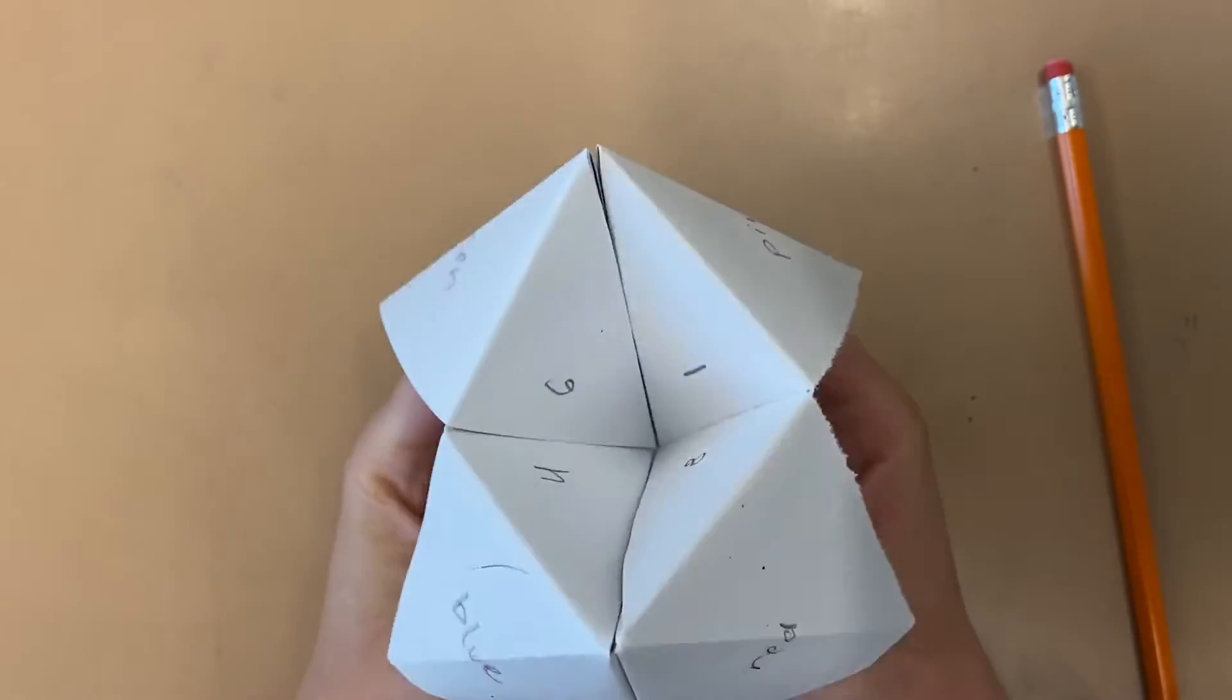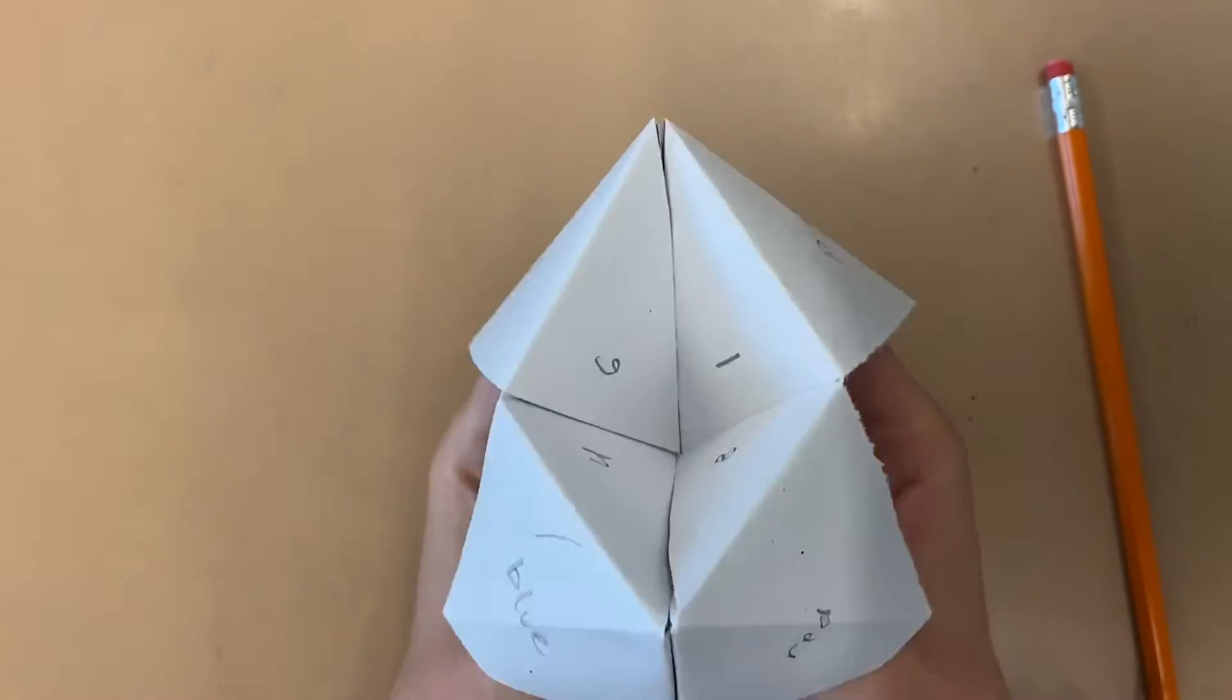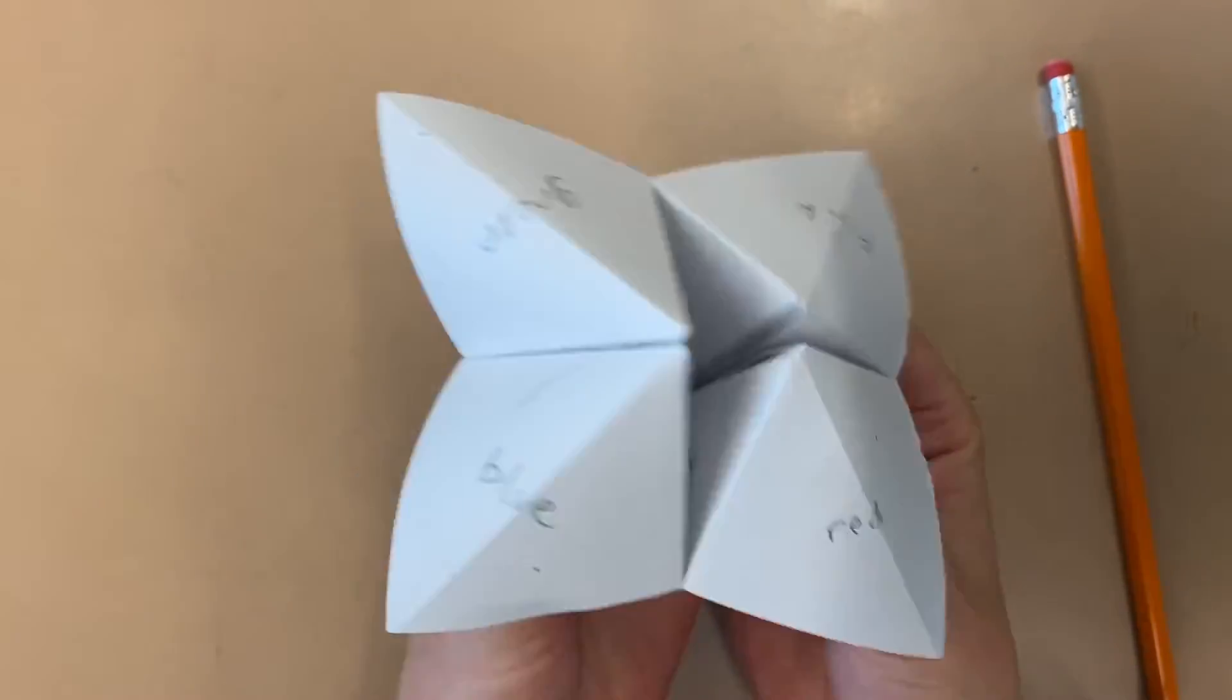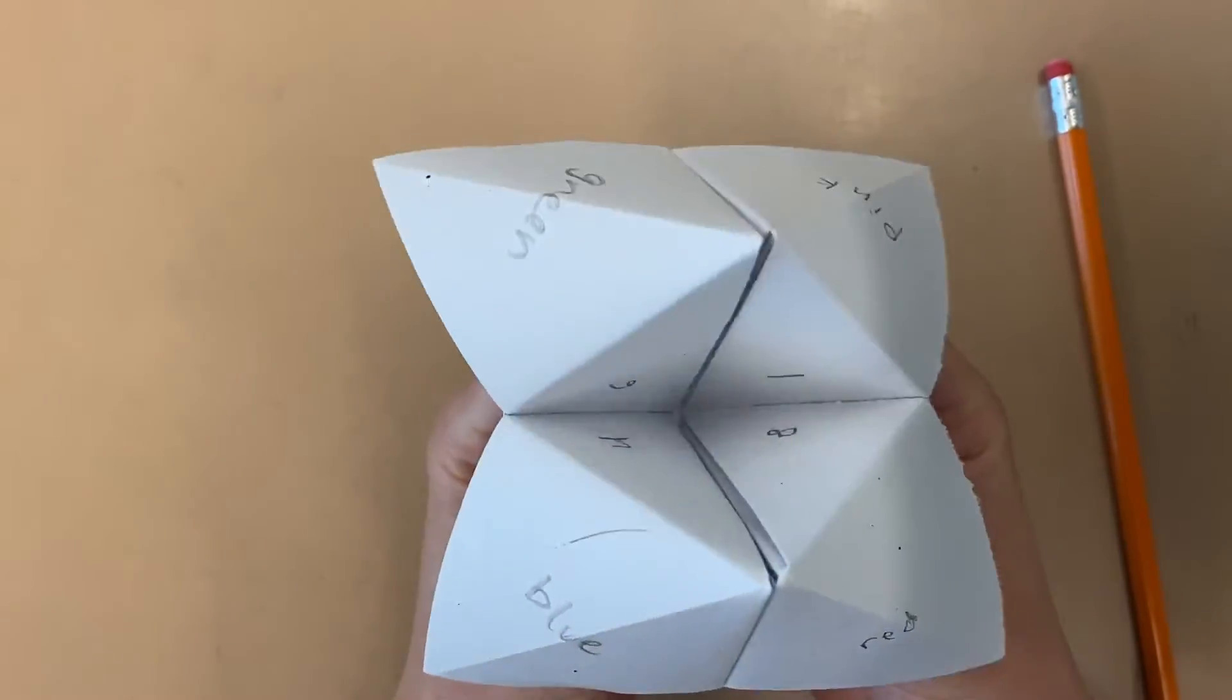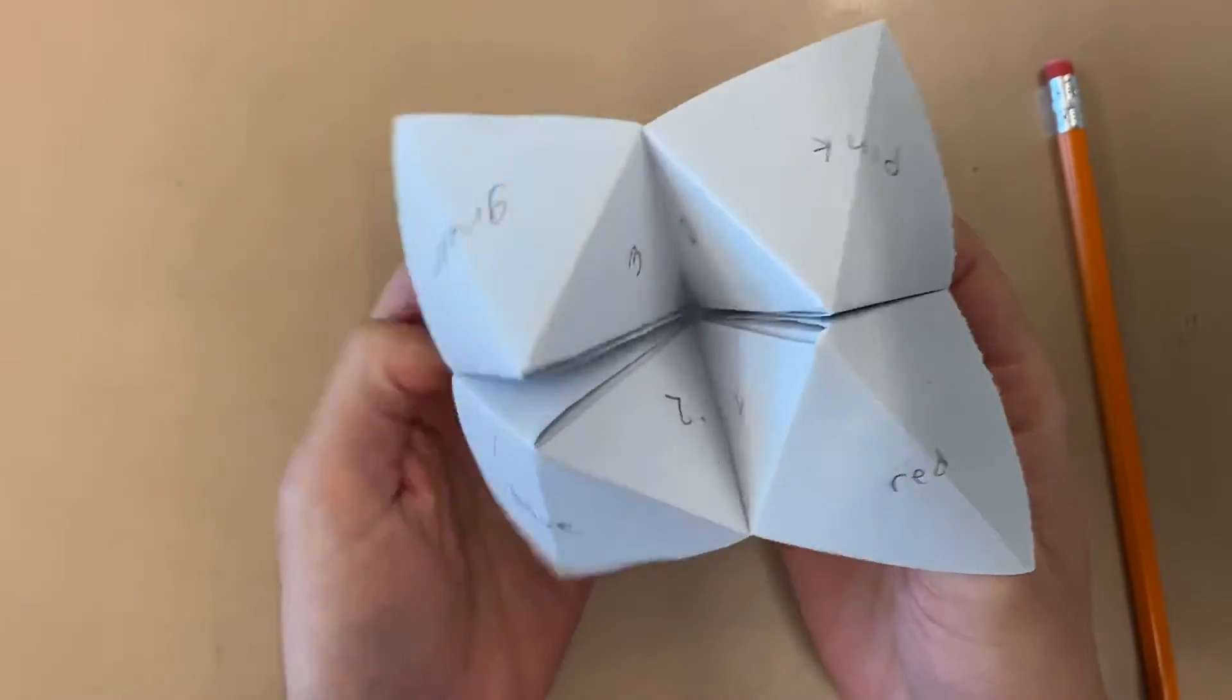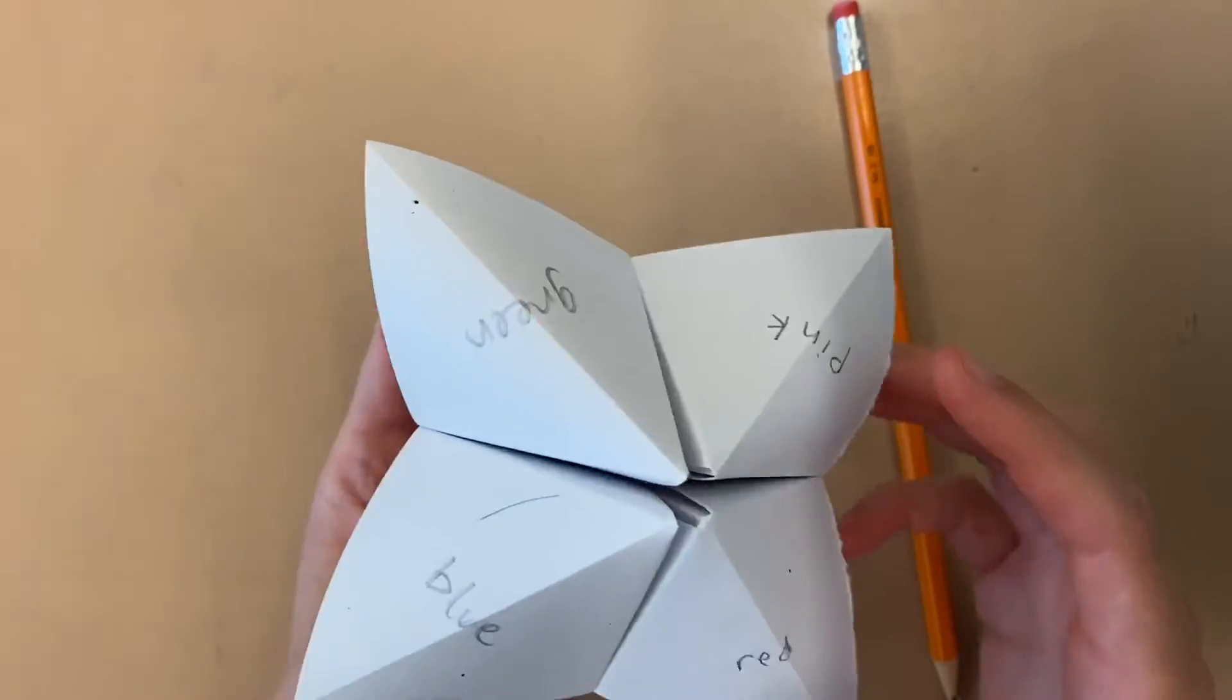At the end of this video, you are going to have one of these fortune tellers with colors on the outside, numbers on the inside, and you're going to be able to use your fingers underneath to open and close it. You're going to learn how to play a game with it. So right now, the only thing you need is a piece of paper and something to write with. Please let your teacher know now if you're missing a piece of paper.